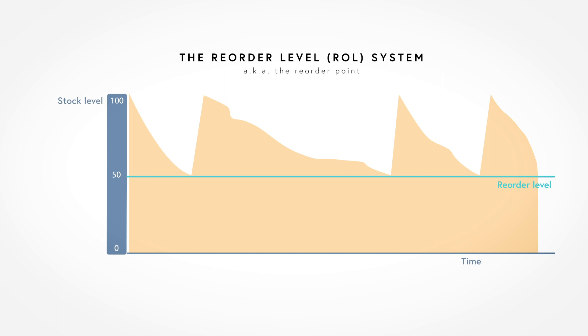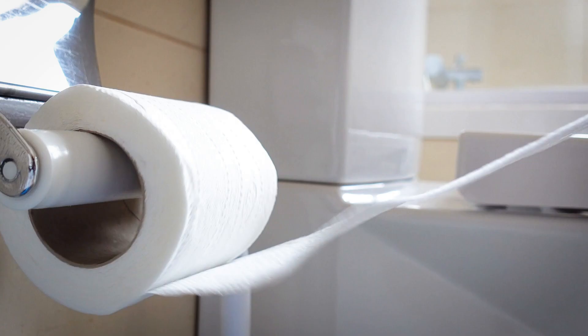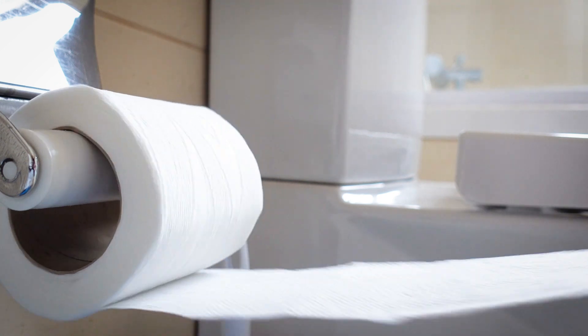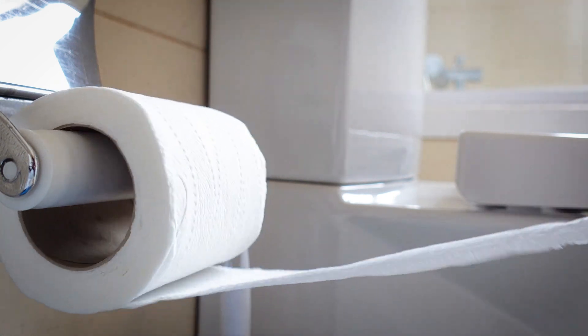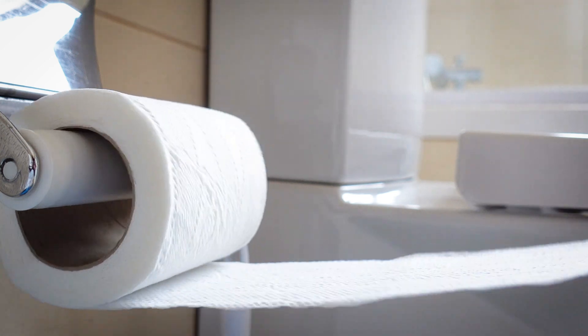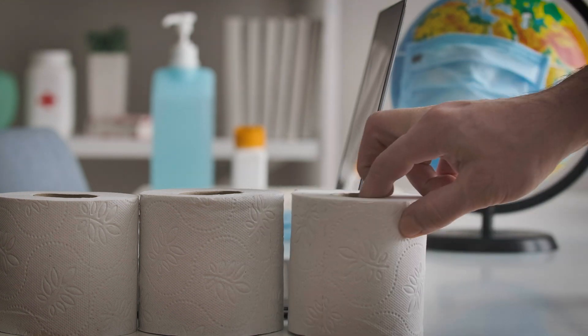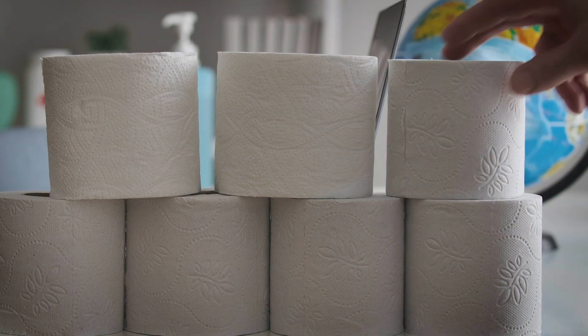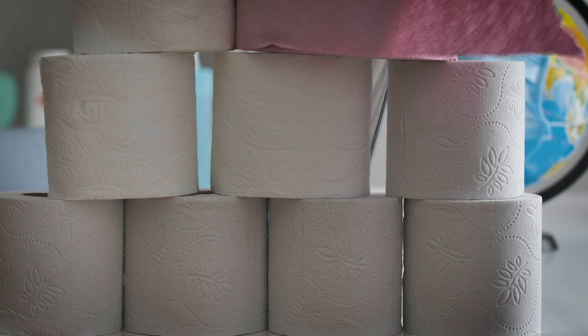We only need two pieces of information to set the reorder point. First, we need the expected consumption of the material in the replenishment time. And second, we need to choose a safety stock to hedge for variation in delivery time and consumption. The trick here is to balance the cost of running out against the cost of holding extra stock. In my toilet paper example, the cost of running out can be pretty severe, so you better always have buffer stock of toilet paper. Variation and risks affect the size of that buffer stock. Remember the start of the pandemic? Most of us chose to hold a bit more safety stock of toilet paper than usual.